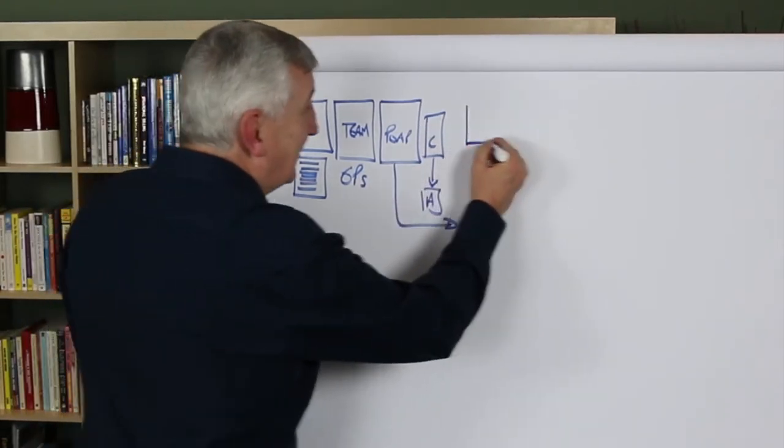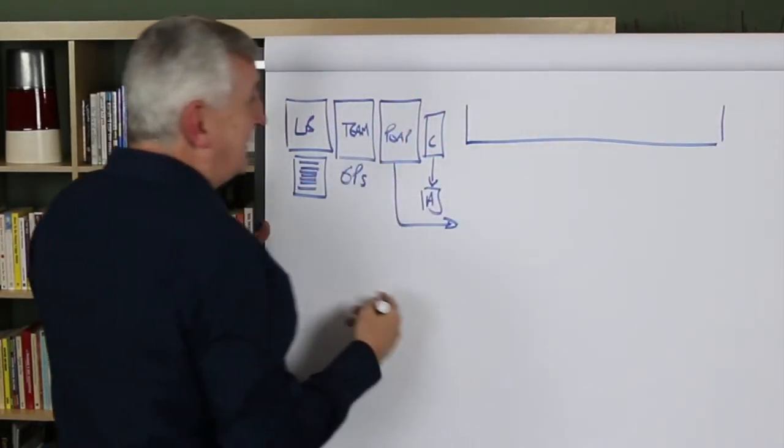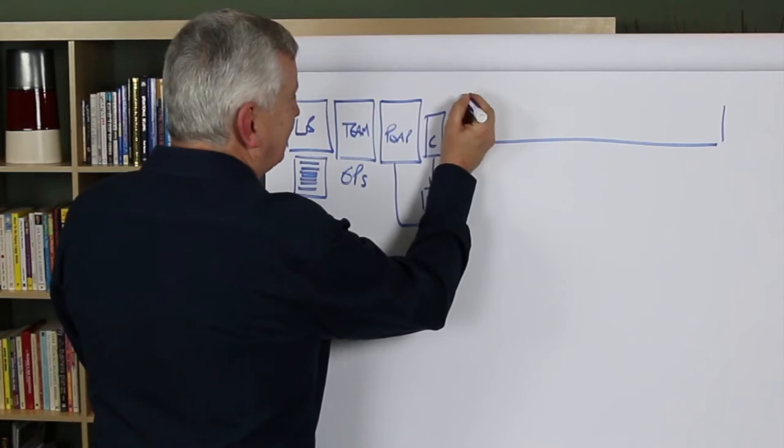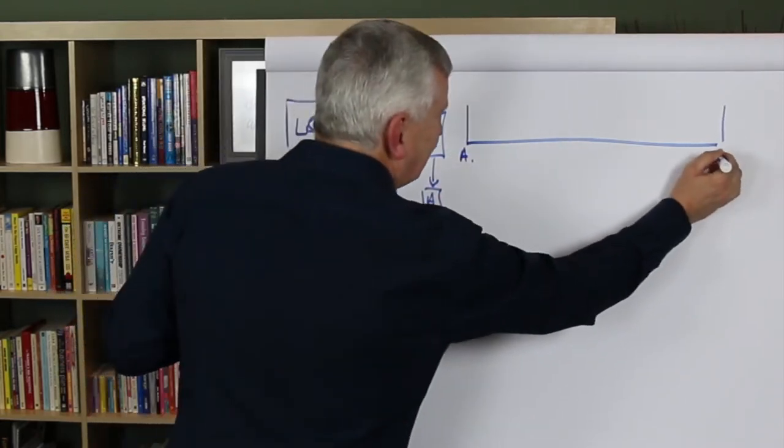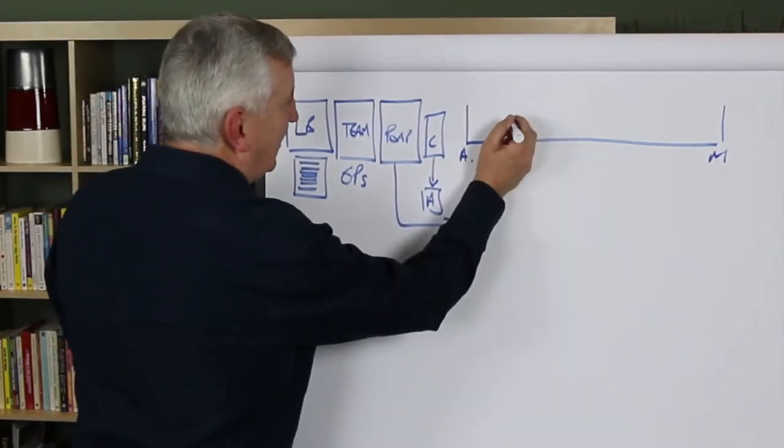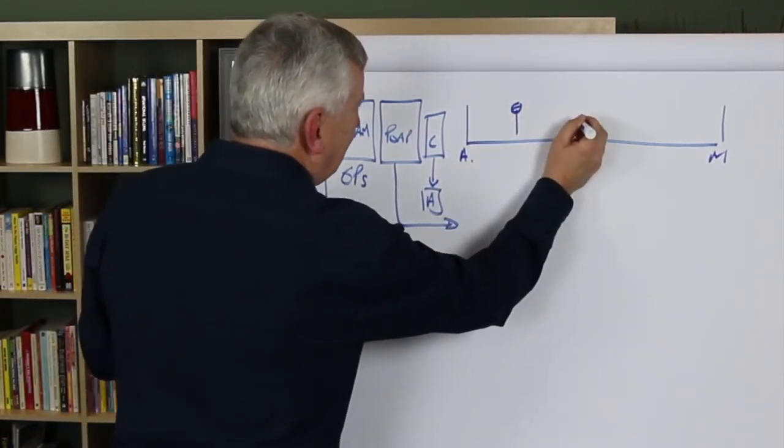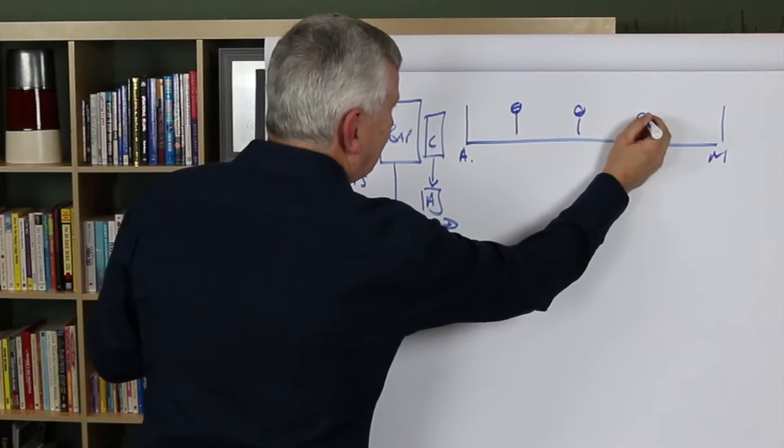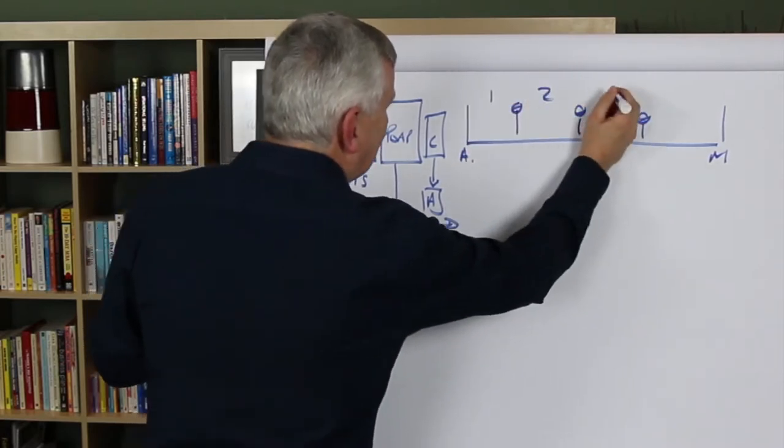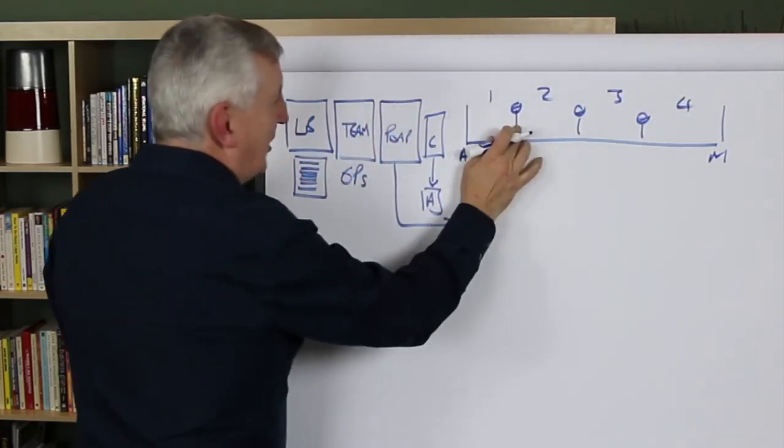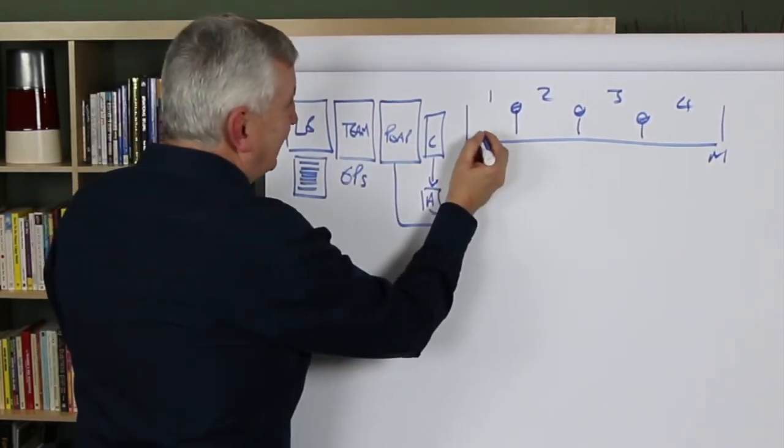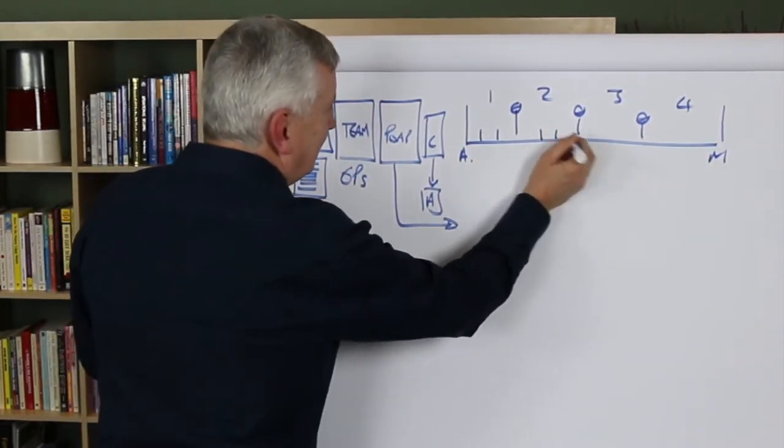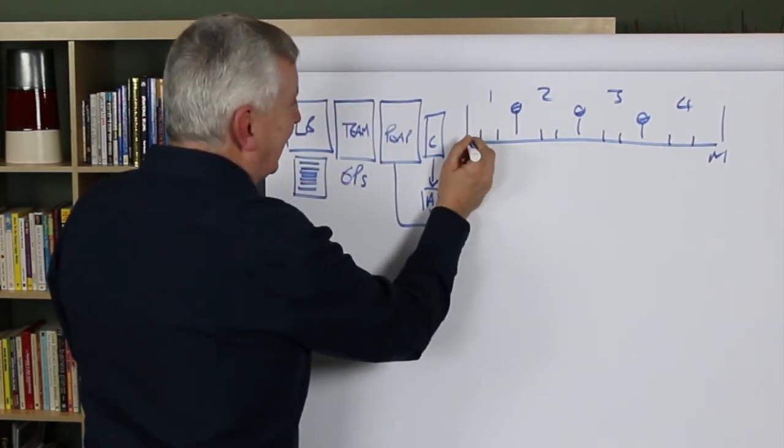So if we take a typical year, for example, in this case, we'll just use a year as an example. Let's say we're going to start the year in April and we're going to go to the end of March. We can break this down into chunks, can't we? So we've got quarter one, quarter two, quarter three and quarter four. So these will be our 90 day points. We can break that down into months and we can break it down into weeks and days.